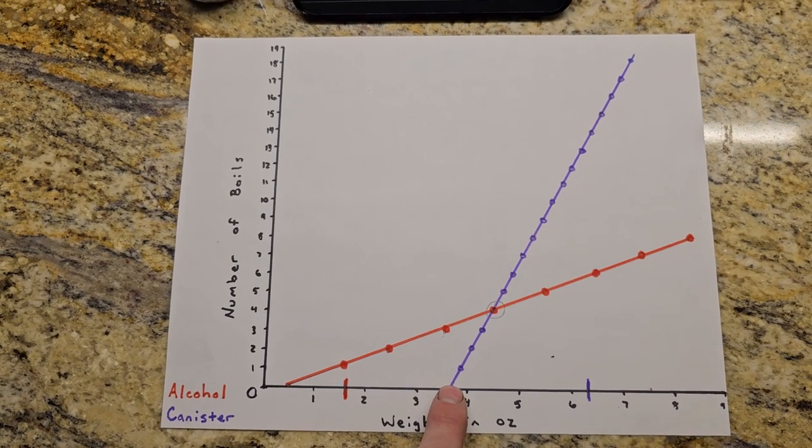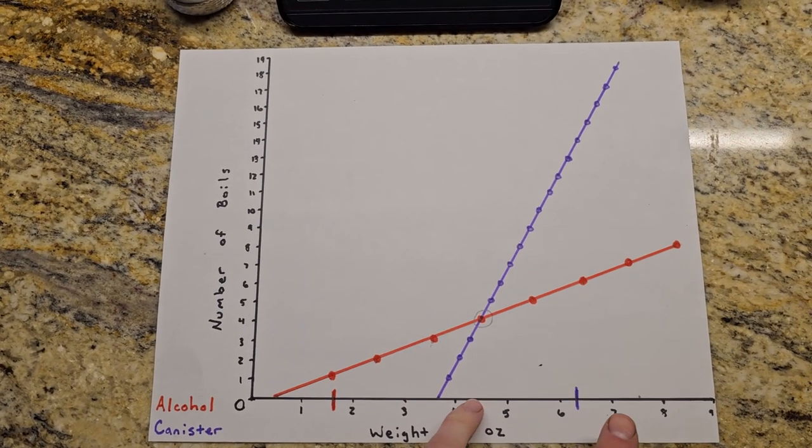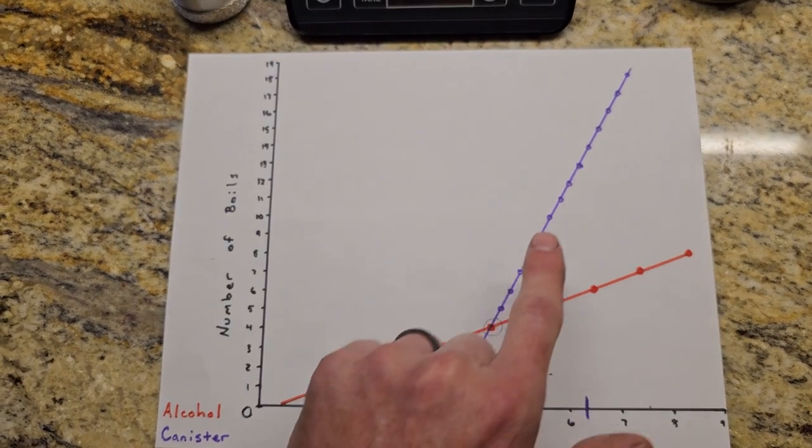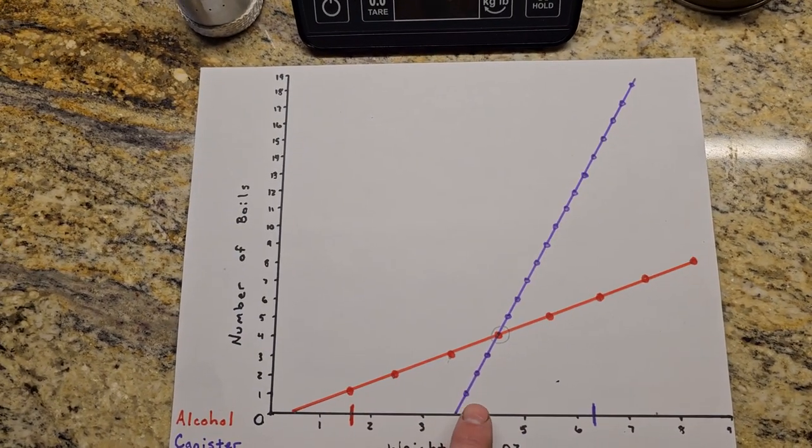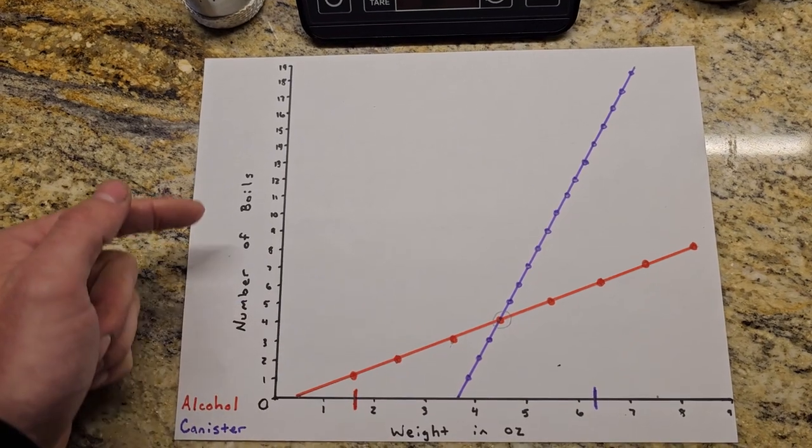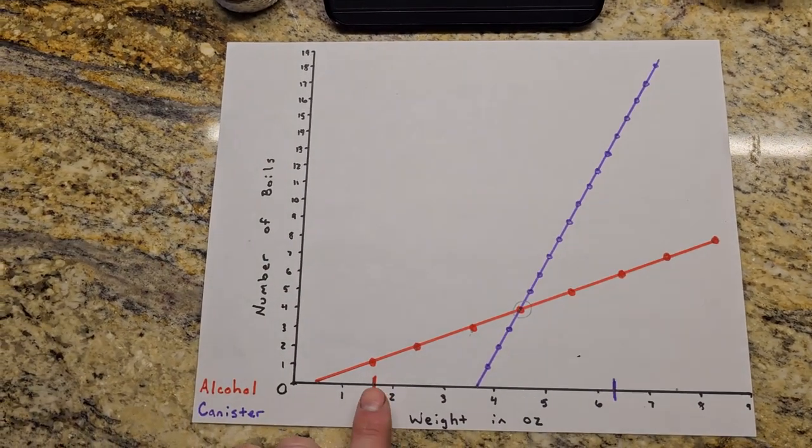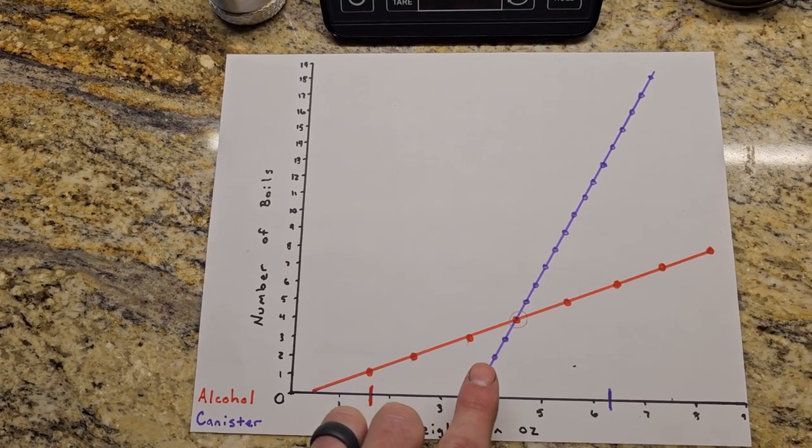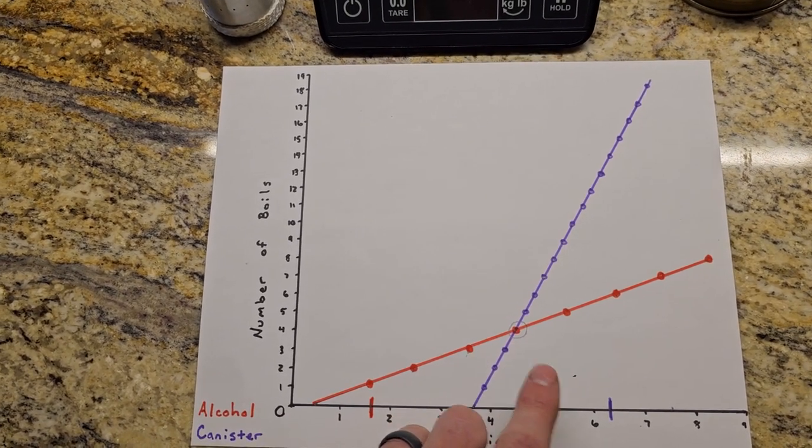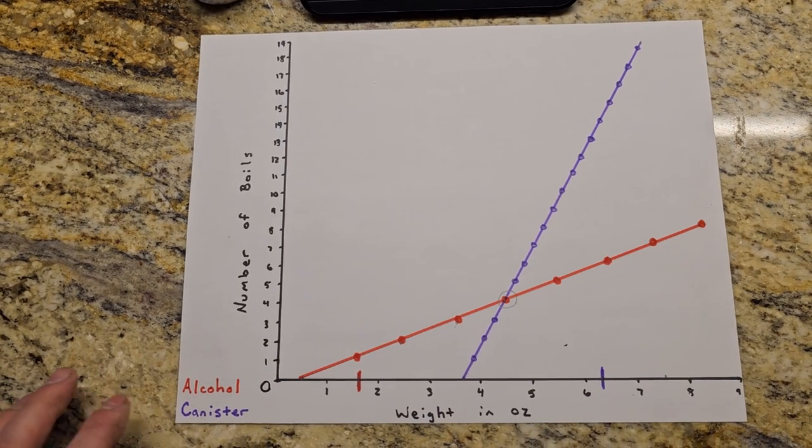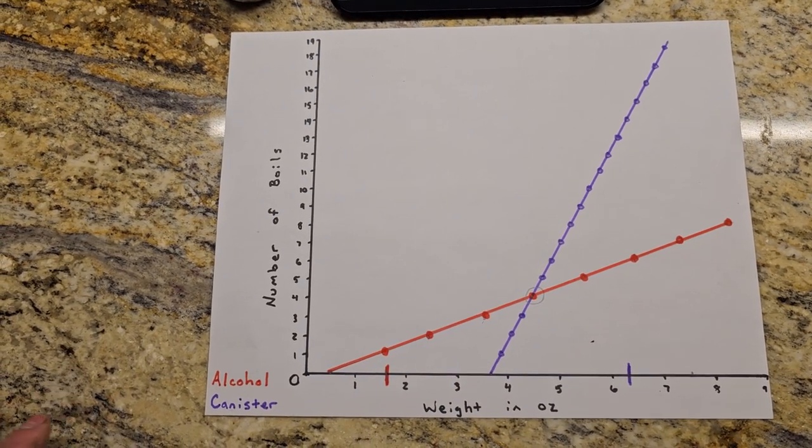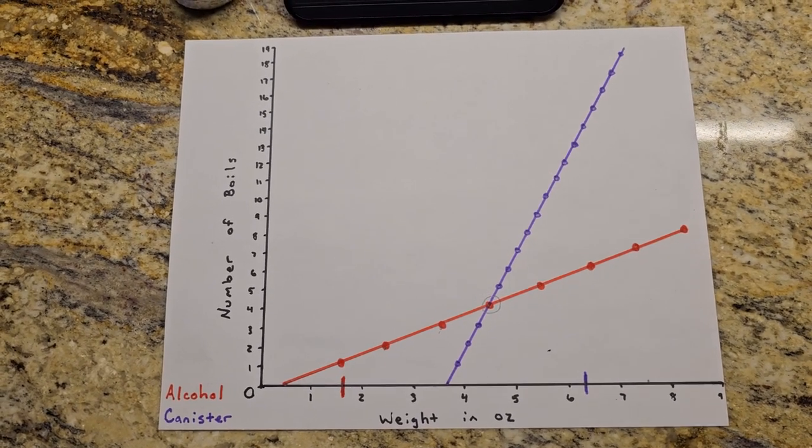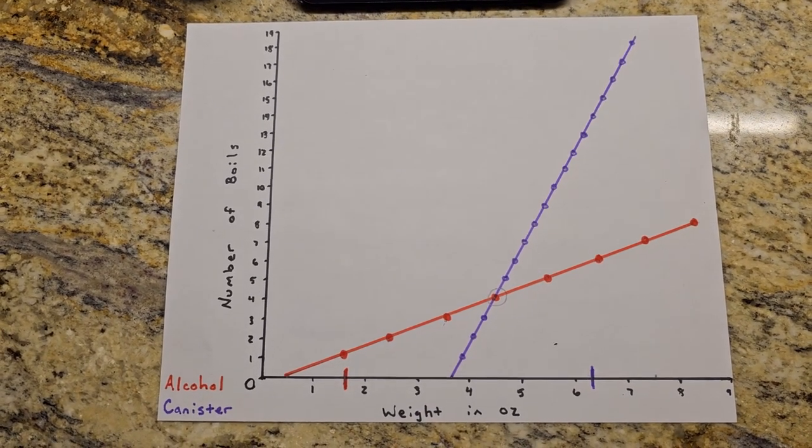So we're getting many more boils for less ounces over here. This thing is so much more efficient, it takes way less fuel to get a certain number of boils. Now the alcohol setup is lighter as long as you're only boiling one, two, three, all the way up to four times, and that is primarily what I would use it for - a one or two night stove fuel setup. That's primarily the types of trips that I take.